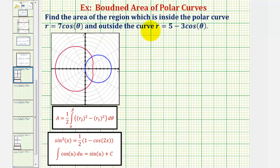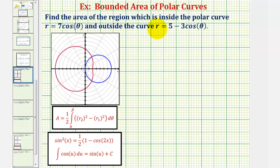We want to find the area of the region which is inside the polar curve given by r equals seven cosine theta, and outside the curve given by r equals five minus three cosine theta.